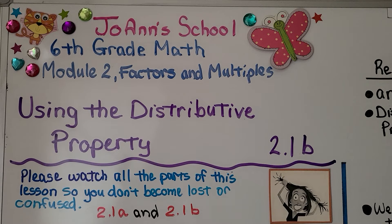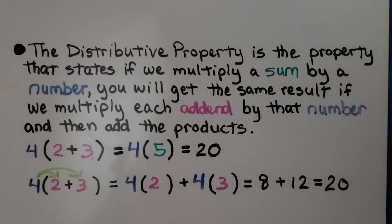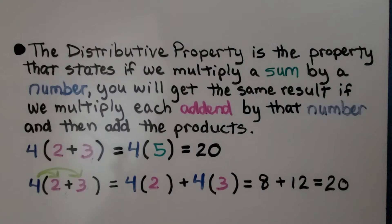Lesson 2.1b — this is the second part of 2.1. We're going to talk about using the distributive property. The distributive property states that if we multiply a sum by a number, we get the same result if we multiply each addend by that number and then add the products.